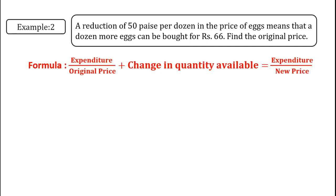A reduction of 50 paisa per dozen in the price of eggs means that a dozen more eggs can be bought for rupees 66. Find the original price. See, the formula to find the original price is given by expenditure upon the original price plus change in quantity available is equal to expenditure upon new price.